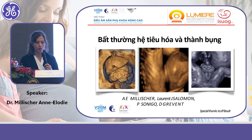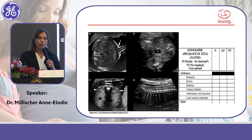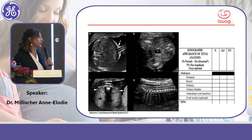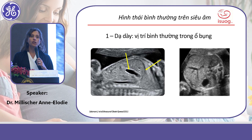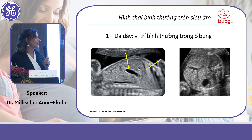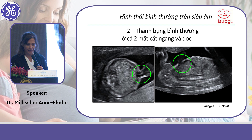Let's move on to anomalies of the gastrointestinal tract and abdominal wall. Just a brief overview of what we need to do in our routine screening — checking the continuity of the wall, the cord insertion, and the position of the stomach, just inferior to the diaphragm. You can see the cord insertion on the sagittal plane to get an idea of the aspect of the bowel.